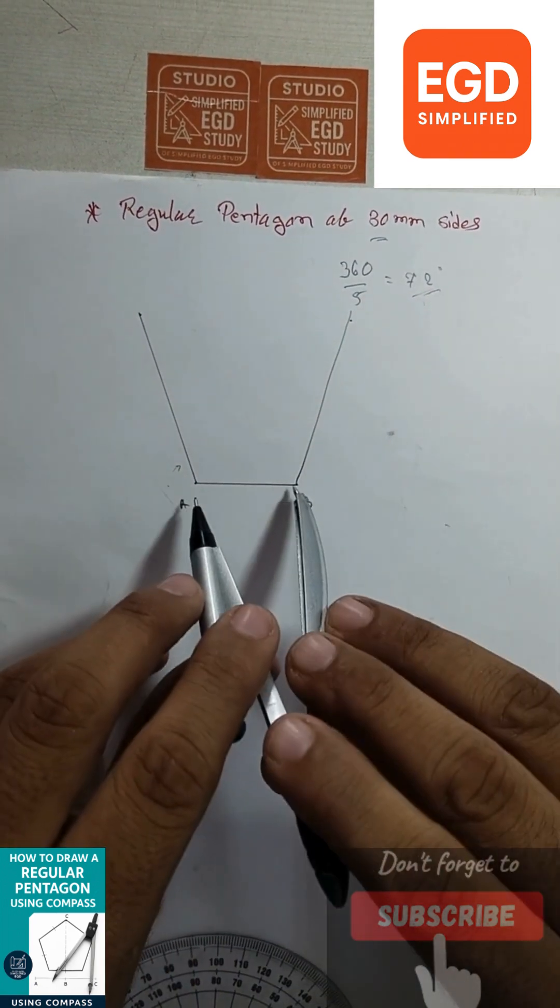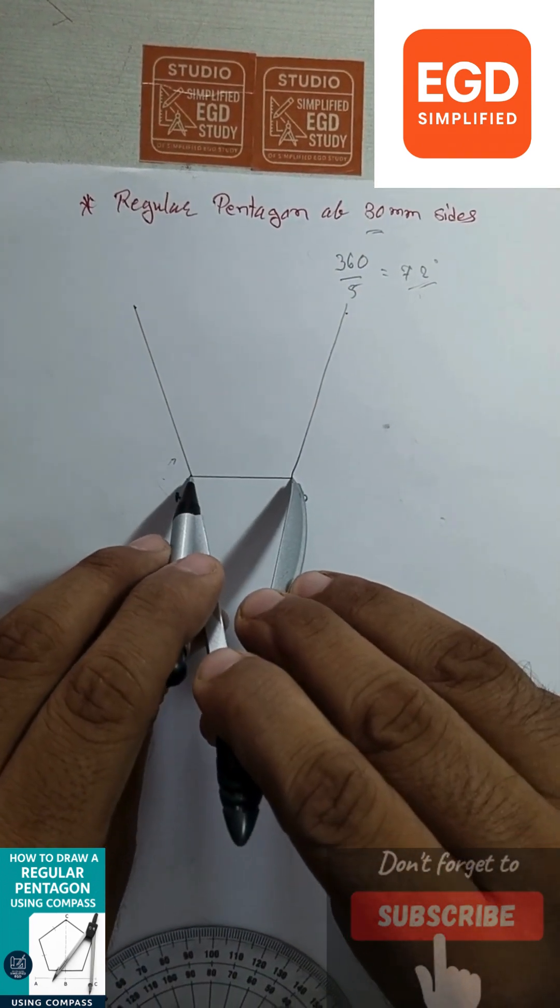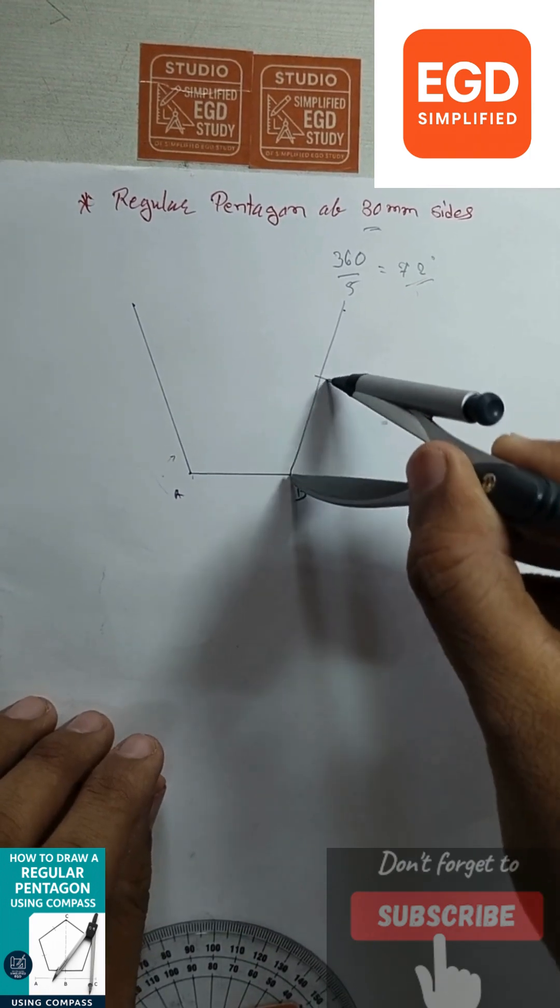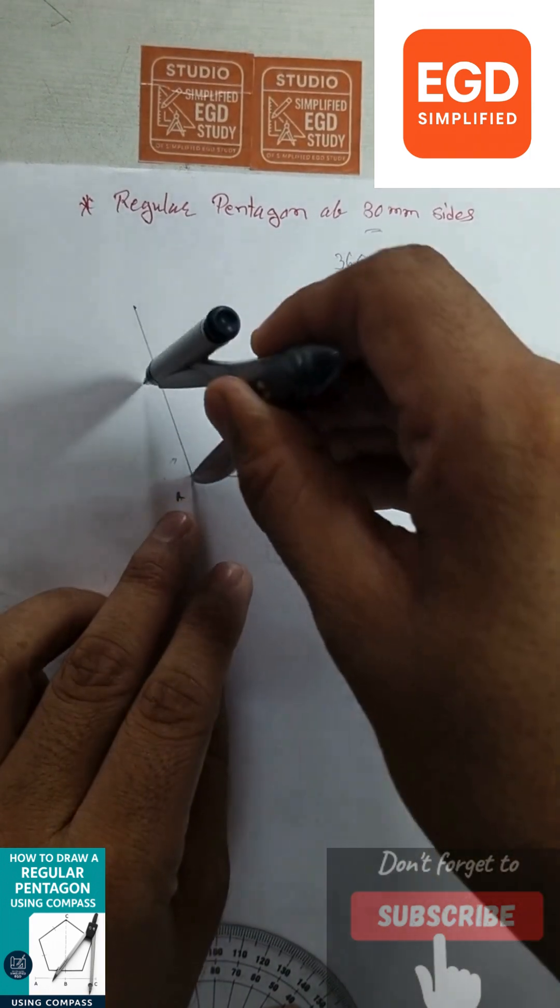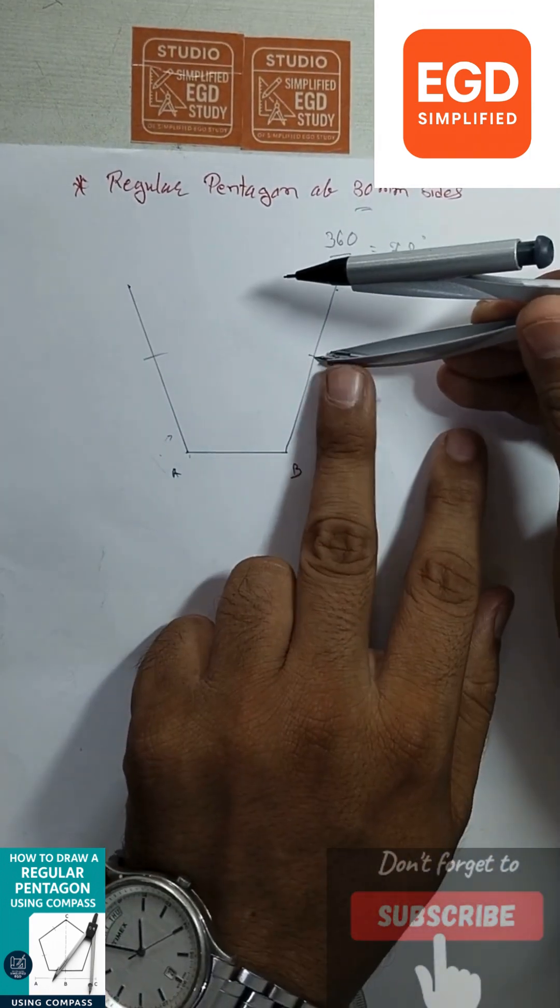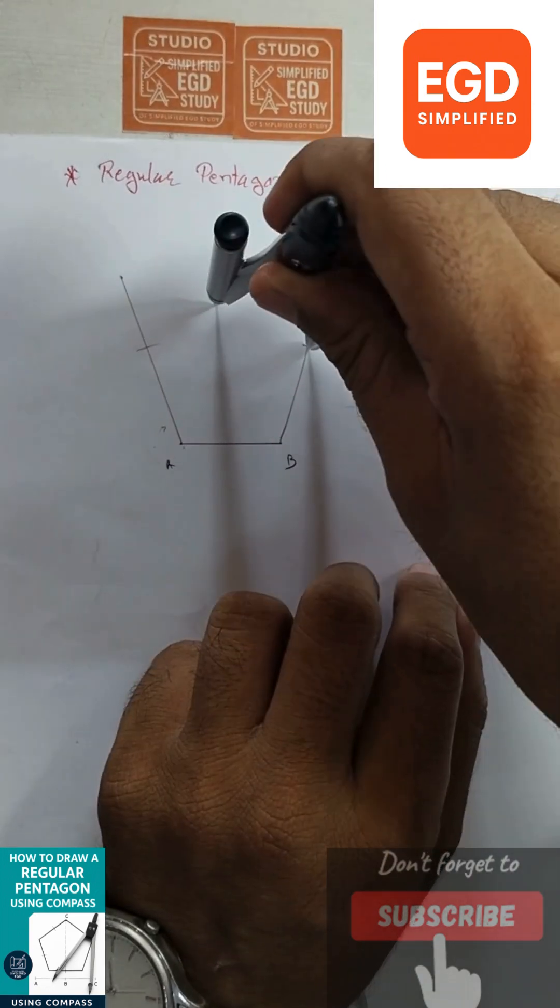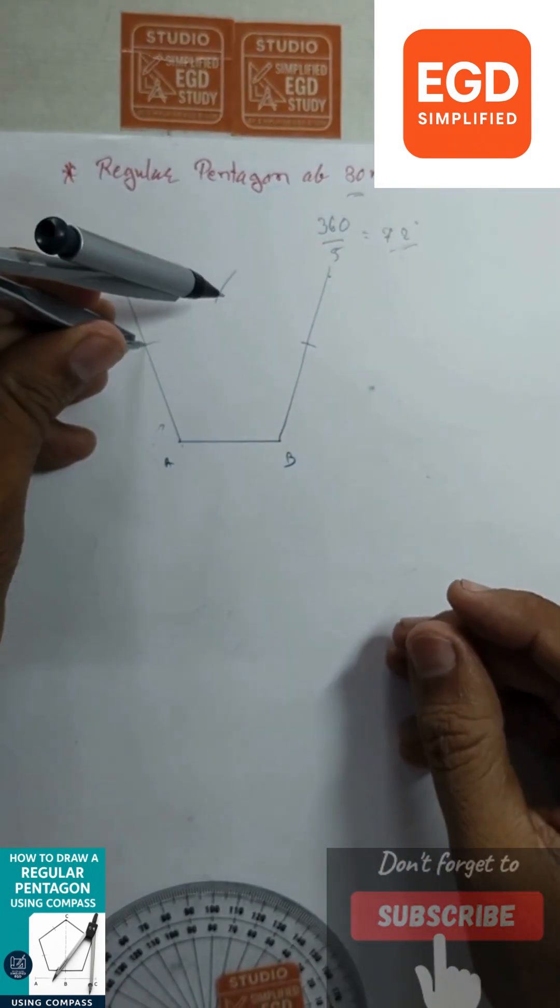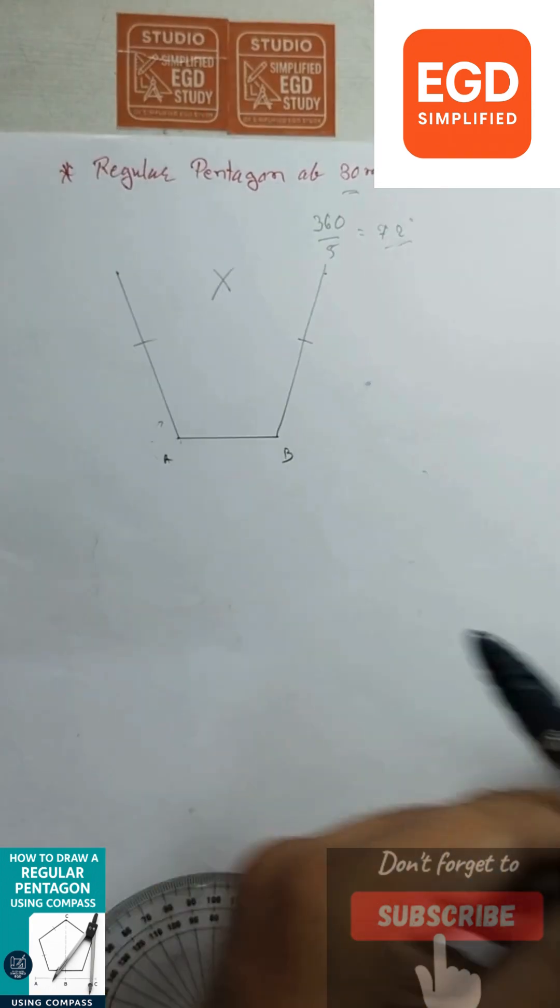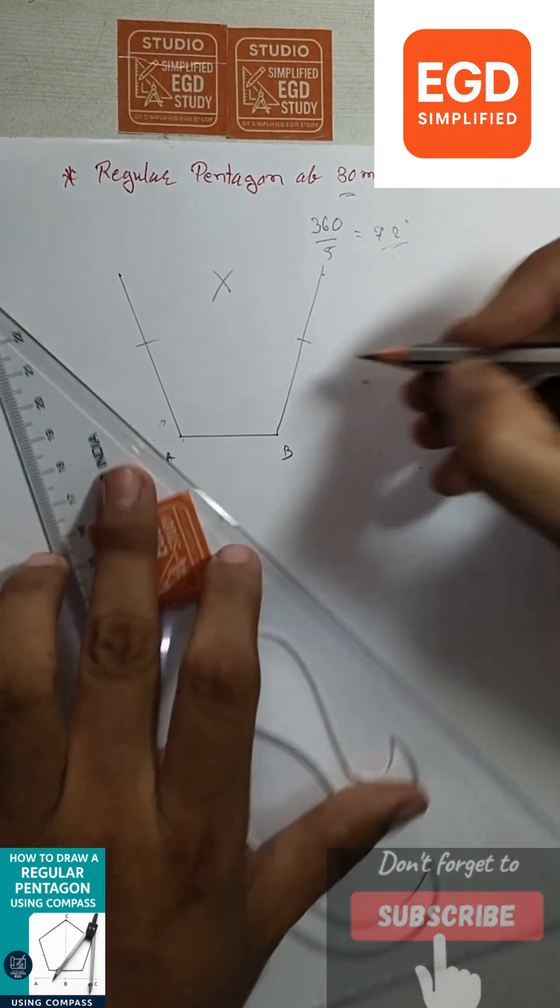Now, take a measurement of AB. Draw arc from B. Then draw arc from both arcs, and intersection of that point will be another point. Now, connect all the points.